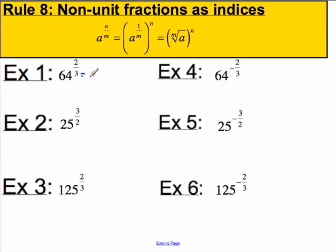64 to the 2 3rd. The best way to work this out is to say, well, what is 64 to the 1 3rd, and raise that all to the power of 2. 64 to the 3rd means the cube root of 64. The cube root of 64 is 4, so this must be equal to 4 squared or 16.